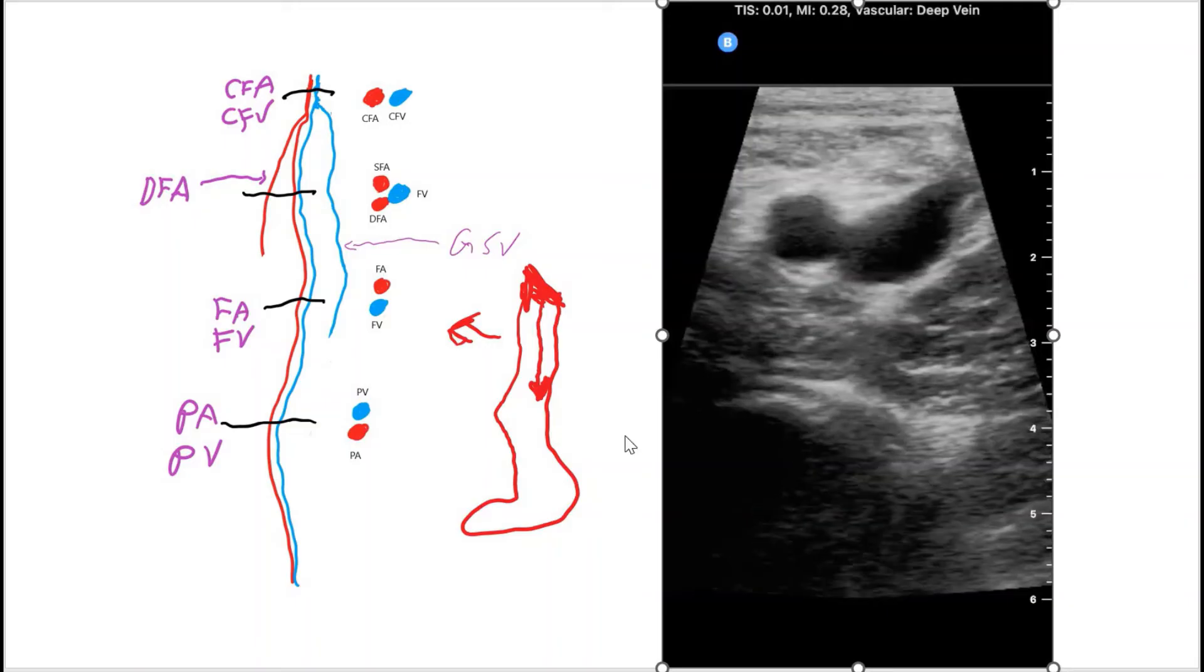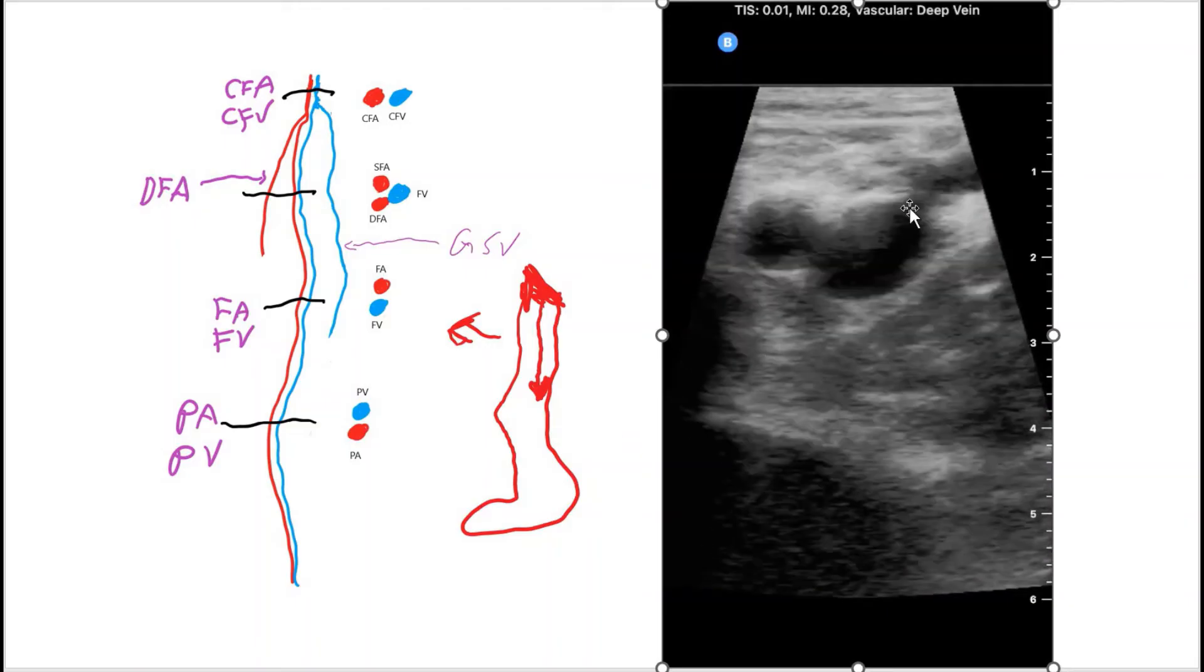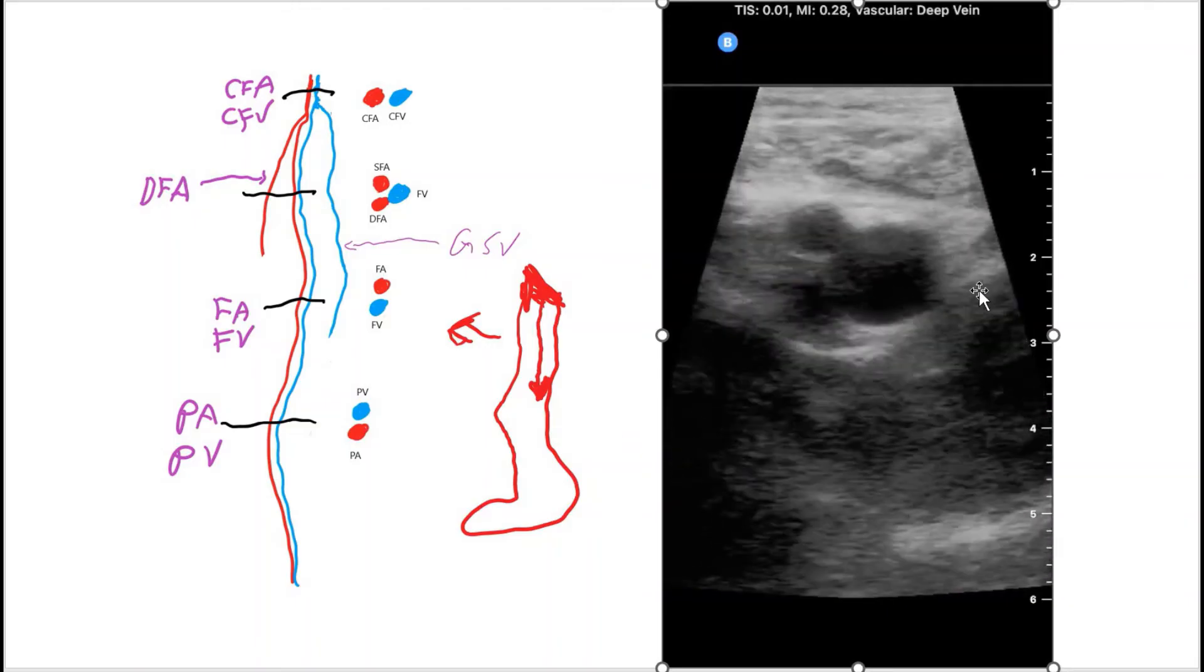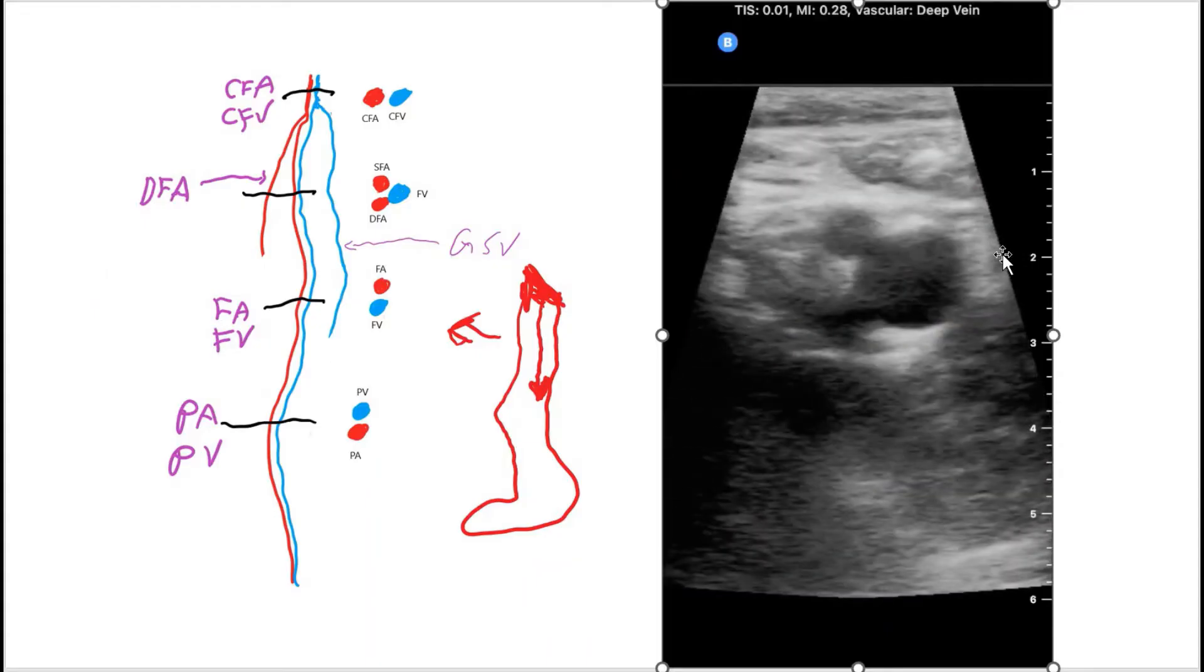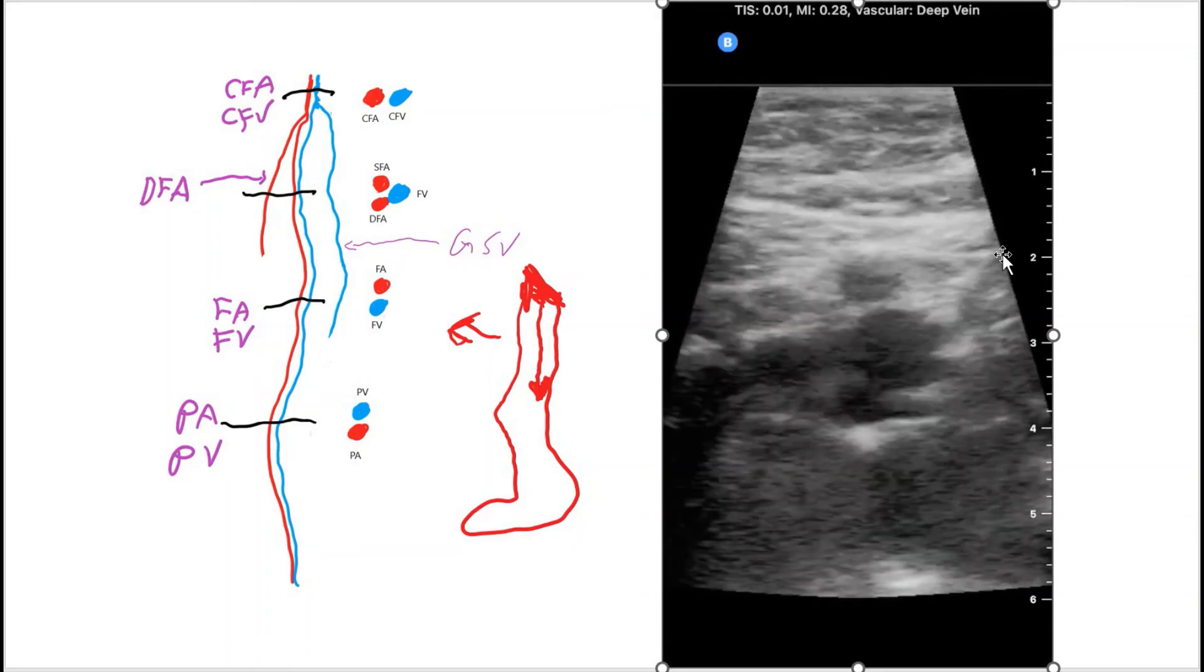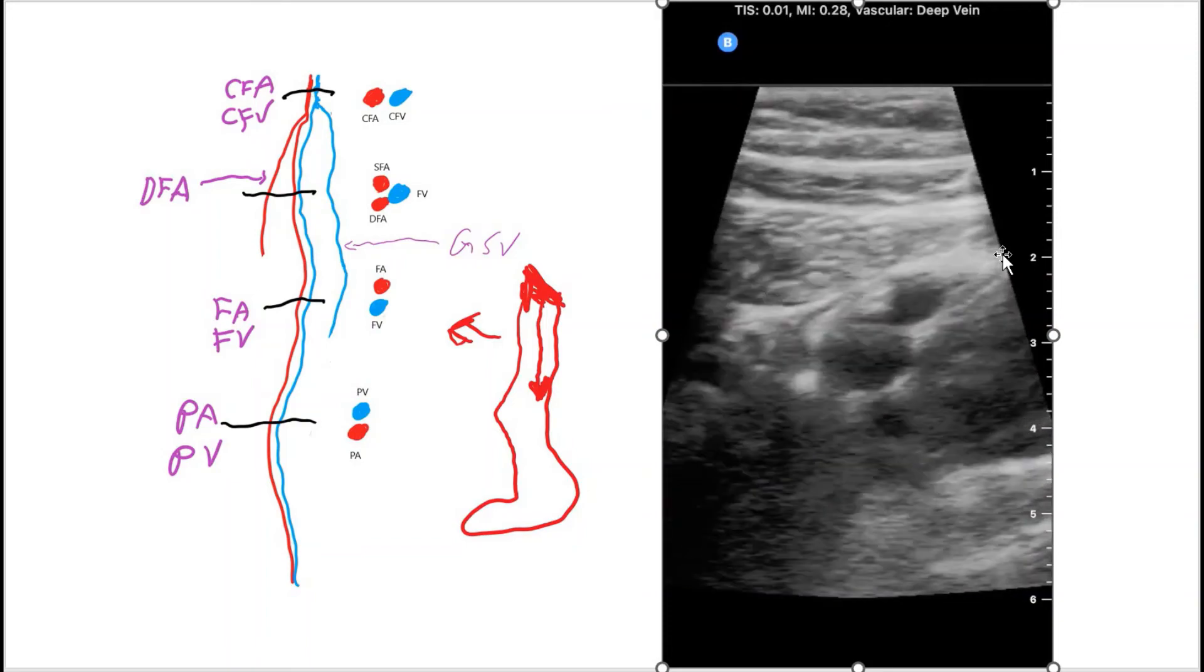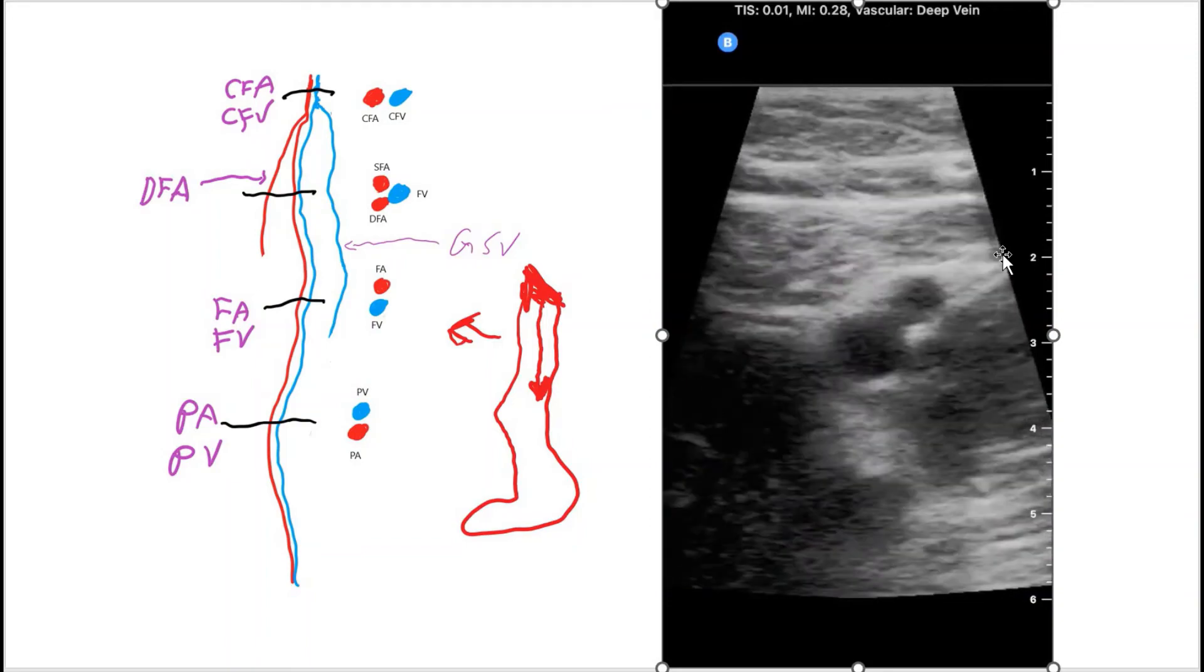And here's a video. So that's the inguinal area. Compress completely. And here you see the Mickey Mouse sign. The vein collapses when you compress. And scan down a little bit more. And you compress. Completely collapses.